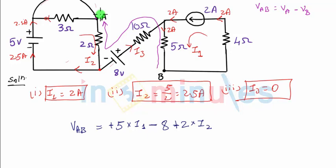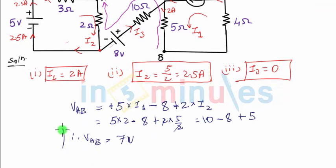Let's put all the values. I1 is 2 minus 8. I2 is 5 by 2. And therefore VAB becomes. This is 10 minus 8 plus 22 will cancel out. This will give me 5. So this makes it 7 volts. That's my VAB. That's my final answer.